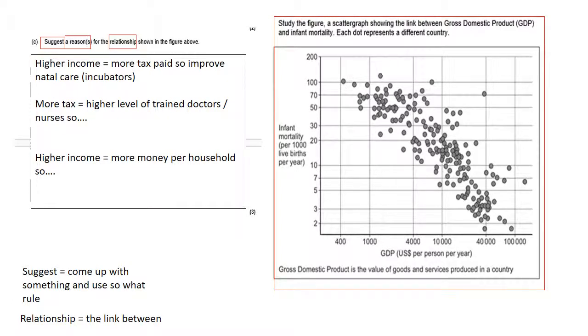So there's several different ways you can do this. We'll start with probably the most obvious one to me, which is if people have higher incomes, they will pay more tax. If they pay more tax, the government can invest it in services. In this case, we want to be talking about hospitals. So therefore, it improves the antenatal or prenatal care. For example, the use of incubators. Incubators provide a sterile environment for babies, and therefore they're less likely to catch the common cold or flu, and therefore they're more likely to survive. Easy. That would get you all three marks.